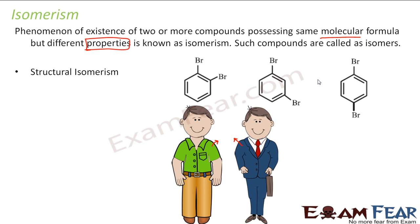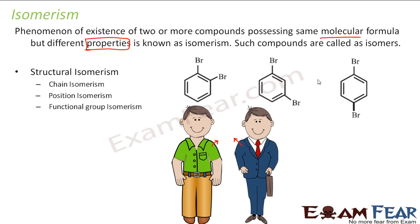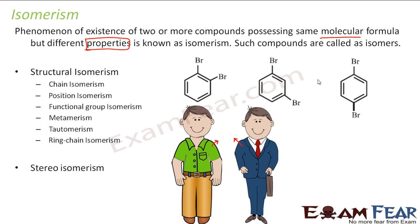There are various types of isomers. Under structural isomers, we have chain isomerism, position isomerism, functional group isomerism, metamerism, tautomerism, and ring-chain isomerism. Under stereo isomerism, we have geometric isomerism and optical isomerism. We will discuss all of these. First, let's start with structural isomerism.